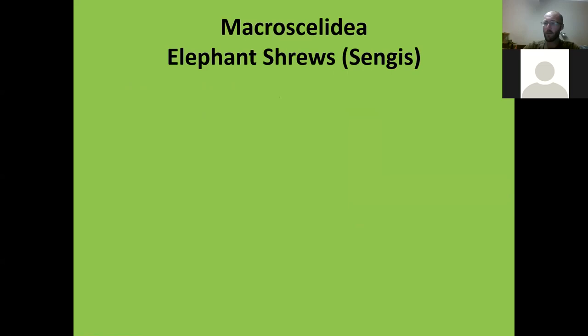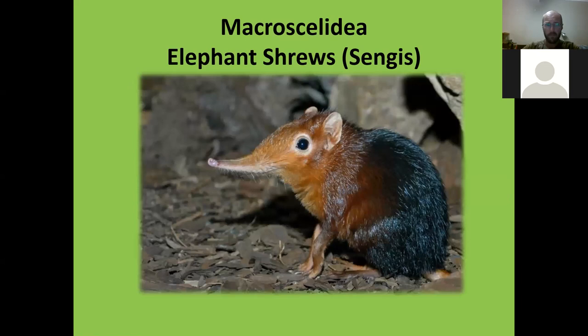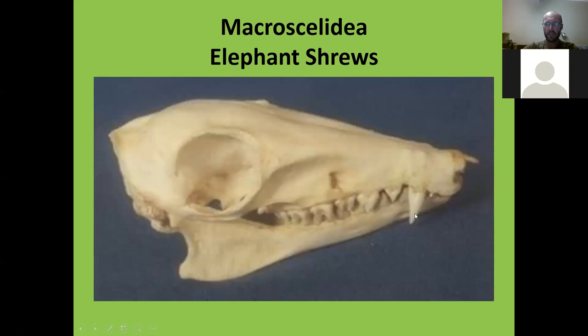Elephant shrews are now known as sengis throughout Africa, and I actually prefer the name sengi. This is why they're called elephant shrews — not because of tusks, but because they have a long, flexible snout they use for sniffing along the dirt. Their face is quite robust, almost rodent-like, with incisors and canines indicating a more predatorial diet. Some of them actively hunt, and they have a carnassial shear indicating they eat larger items.